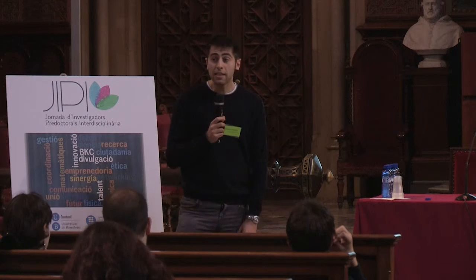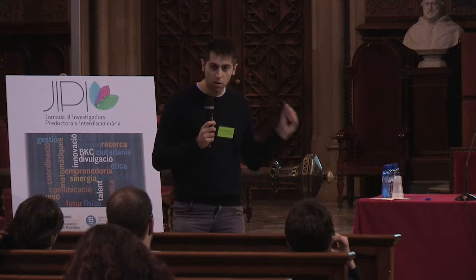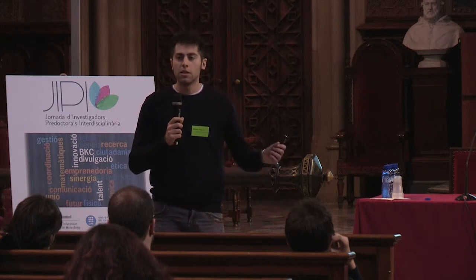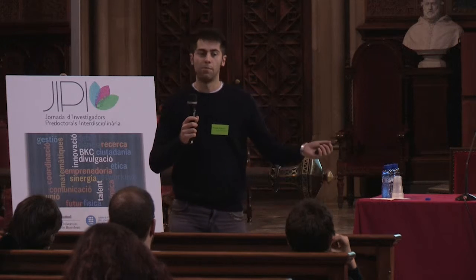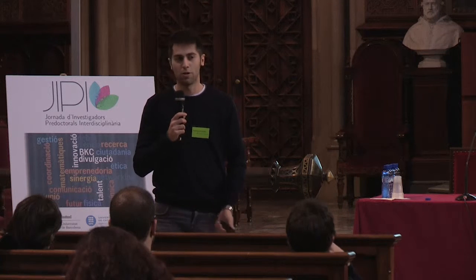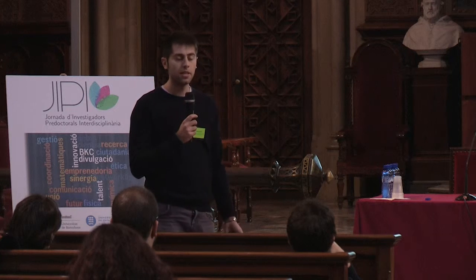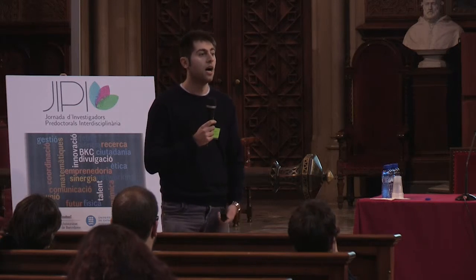In this slide I want to explain the physical principles of X-ray crystallography, and to do that I want to give you an easy example to understand it. So let's take a Volkswagen Beetle, but it's invisible. So if you want to understand the structure, we try to launch some bolts to it, and we record how the bolts are bounced off. And in X-ray crystallography it's more or less the same — the bolts are X-rays, and the car is our macromolecules.